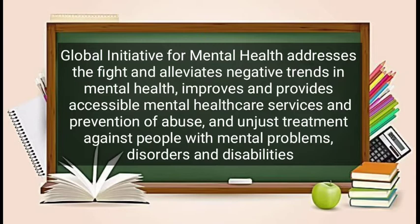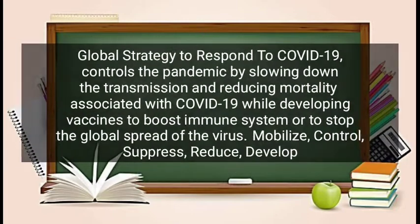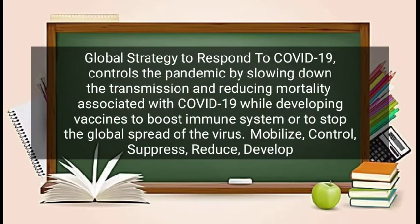Third, global initiative for mental health addresses the fight and elevates negative trends in mental health, improves and provides accessible mental health care services, and prevention of abuse and unjust treatment against people with mental problems, disorders, and disabilities. Fourth, global strategy to respond to COVID-19 controls the pandemic by slowing down the transmission and reducing mortality associated with COVID-19 while developing vaccines to boost the immune system or to stop the global spread of the virus. It mobilizes, controls, suppresses, reduces, and develops.